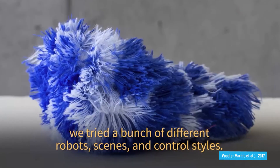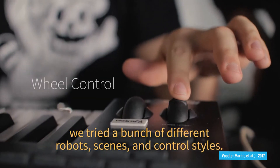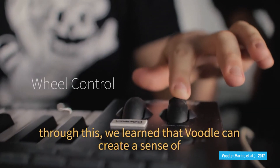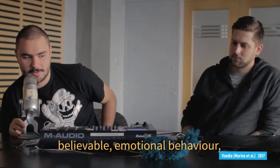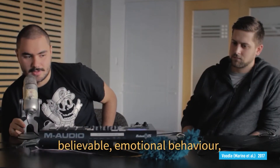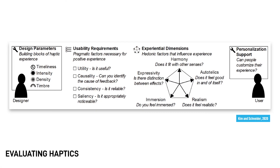As the prototypes evolve into published applications, designers may opt for controlled quantitative user experiments to validate their design. In recent years, guidelines on how to evaluate the usability of haptic experiences as well as their sensory and emotional aspects are starting to emerge. These guidelines can establish standard practices and make the field more accessible for novice hapticians.